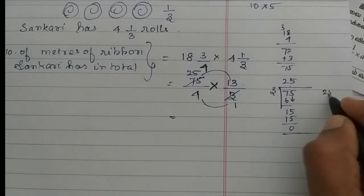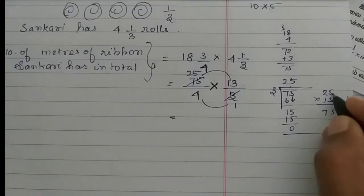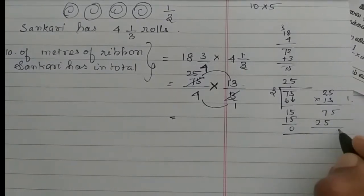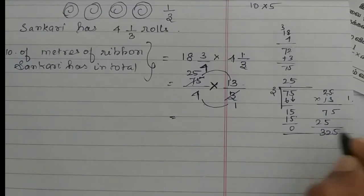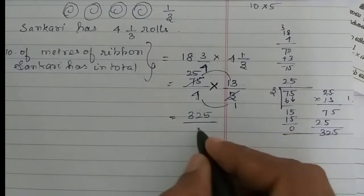So 25 into 13, 3 5s are 15 balance 1, 3 2s are 6 plus 1, 7, 1 5s are 5, 1 2s are 2. So 5, 2, 3, 325 is coming. So 325 divided by 4 into 1, 4.